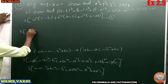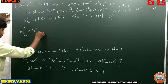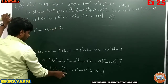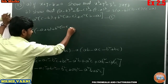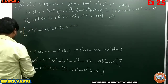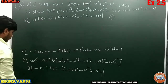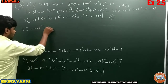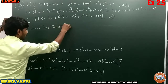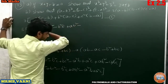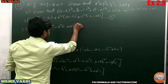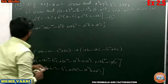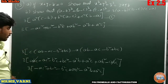Writing the full expansion one more time: minus ac squared plus bc squared minus b squared c plus ab squared minus a squared b plus a squared c. Taking c squared common from the first two terms gives c squared into b minus a. Taking b squared common gives b squared into a minus c. Taking a squared common gives a squared into c minus b.